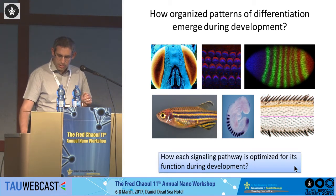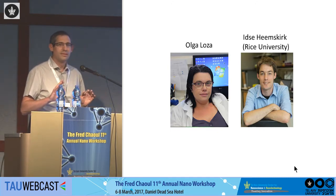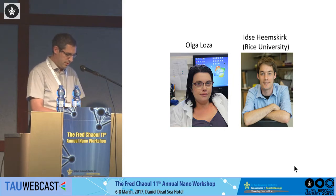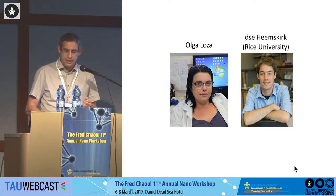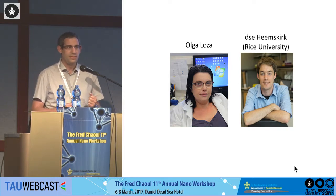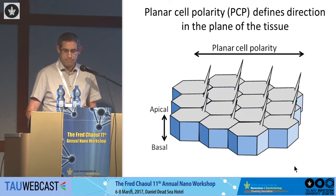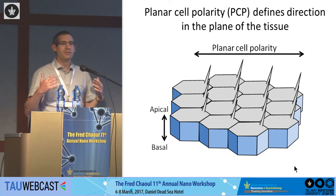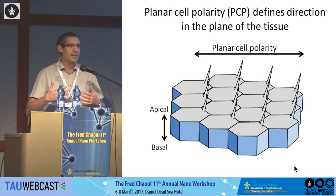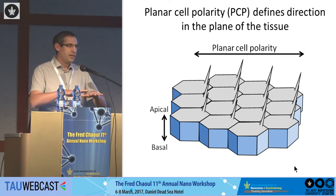The story I'm going to tell you today talks about polarity. This is really great work done by two great students: Olga Loza, who was a PhD in my lab and is currently at Bar-Ilan, and Itze Himskerk, currently a postdoc at Rice, who is a physicist and did a lot of the quantitative analysis. Many of the tissues in our body are planar or epithelial tissues — the skin, the intestine, the blood vessels — we're talking about two-dimensional or quasi-two-dimensional tissues.